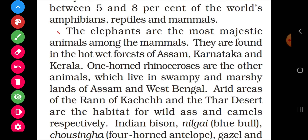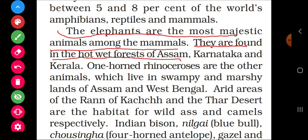The elephants are the most majestic animals among the mammals. Among all mammals, the elephant is the most majestic. They are found in the hot wet forests of Assam, Karnataka, and Kerala.